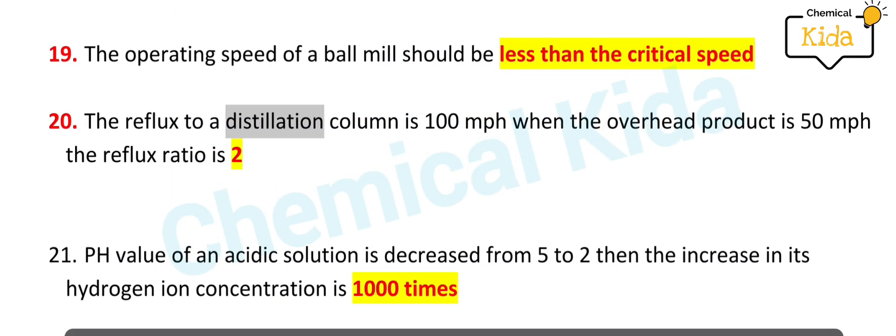The reflux to a distillation column is 100 moles per hour when the overhead product is 50 moles per hour. The reflux ratio is 2.